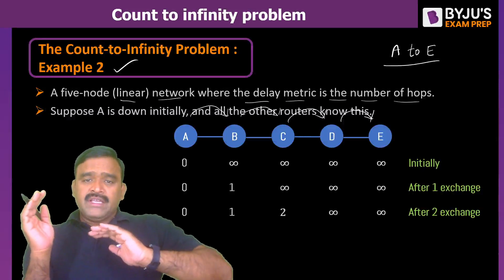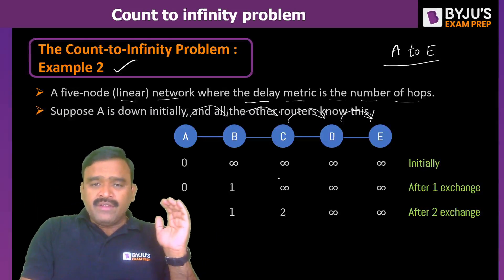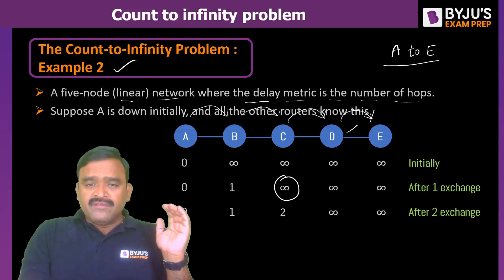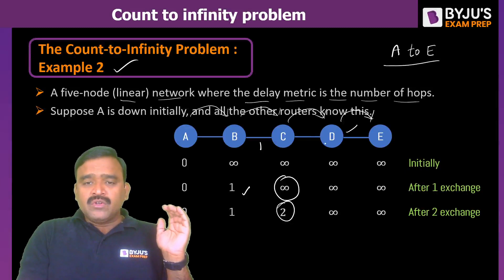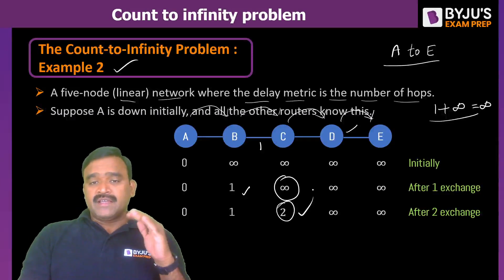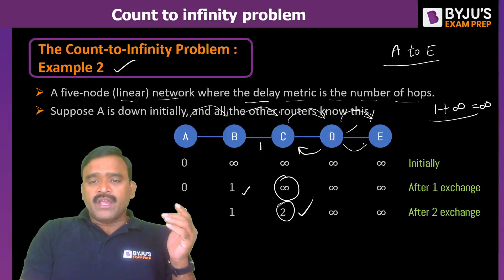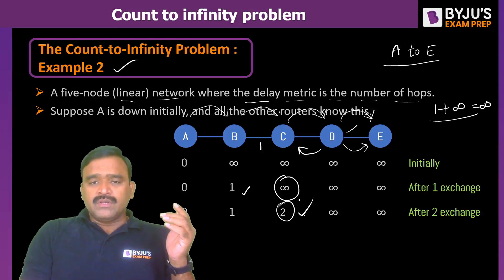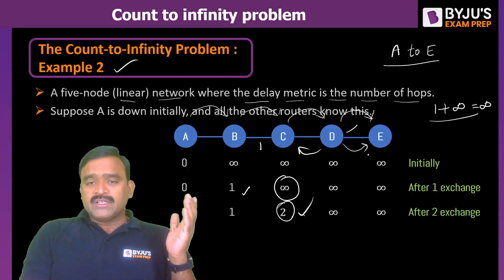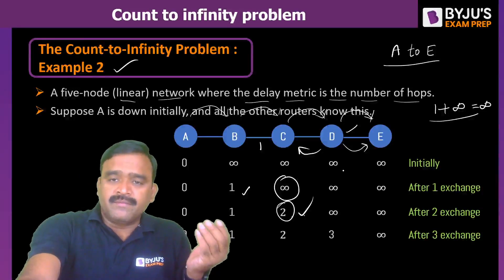Now in the next exchange, actually C is having two neighbors. We are having infinity here and D says that I can reach in infinity and B says I can reach in one hop, so C to B is one hop and B to A is one hop, so one plus one, two is updated. If you go via D, C to D is one and D to A is having infinity, so one plus infinity is infinity. Minimum of infinity and two is two, so two is updated after the second exchange. Now when the turn has come for D, D is having two neighbors C and E. If it goes to A via C, one plus two, it is already saying that C to A is two and D to C is one, so one plus two is three hops and it is infinity plus one, it is infinity only. We can take this. D is having three hops to the A, this is after third exchange.